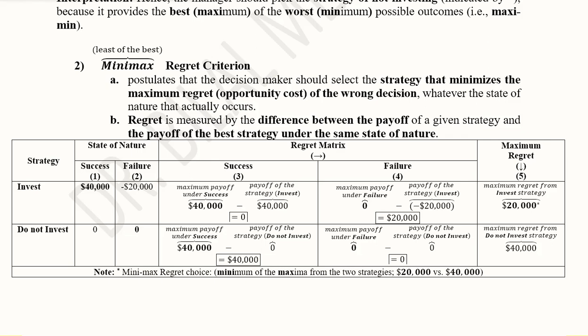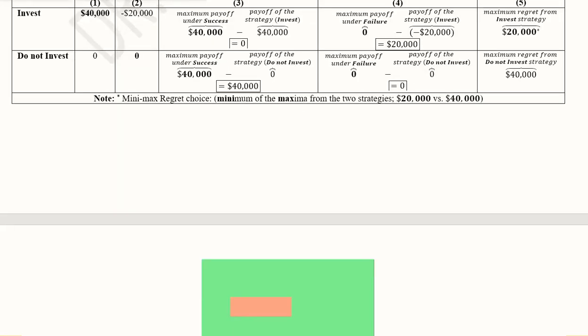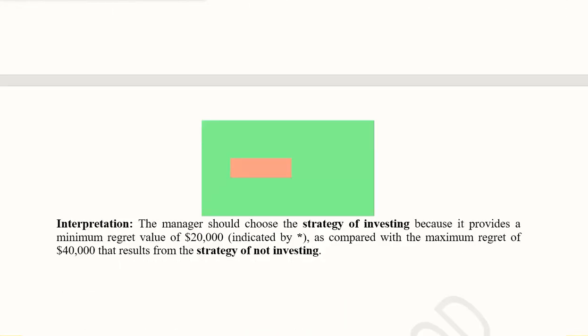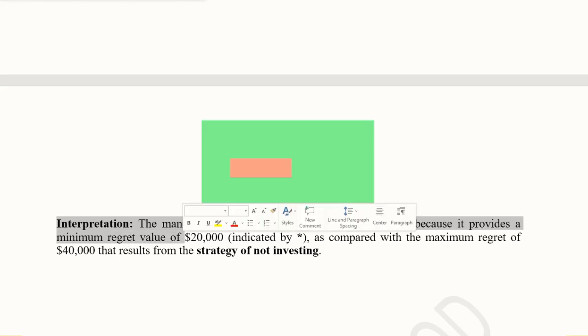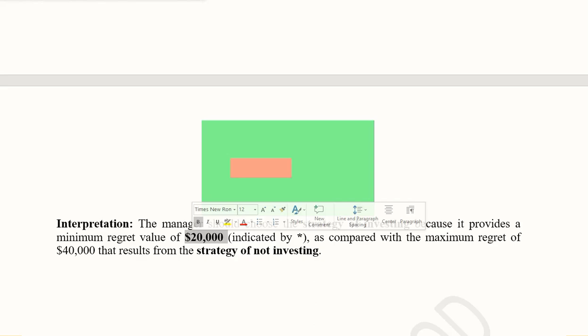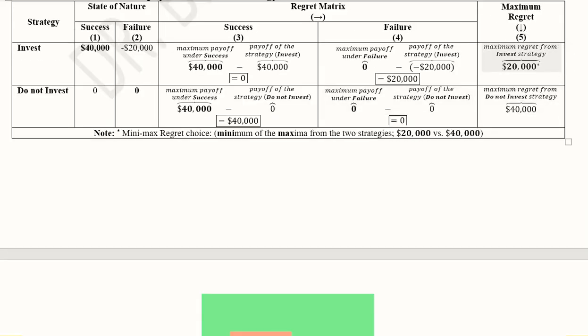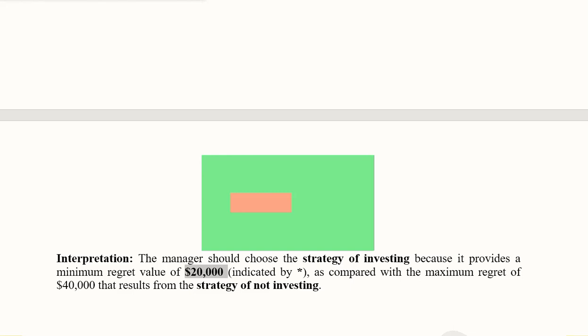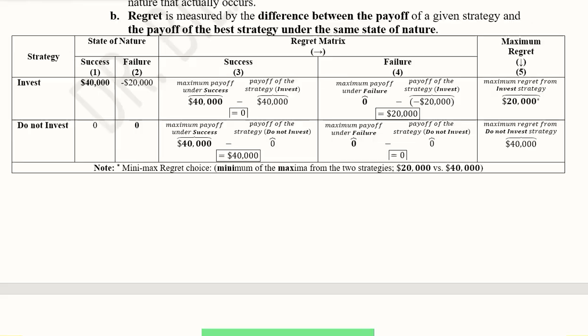The minimum regret of $20,000 corresponds to the invest strategy. Therefore, the manager should choose the strategy of investing, as it provides a minimum regret value of $20,000, compared to the maximum regret of $40,000 adjacent to the do-not-invest strategy.